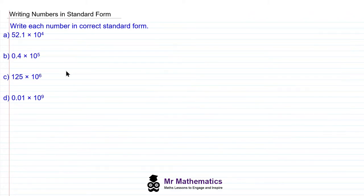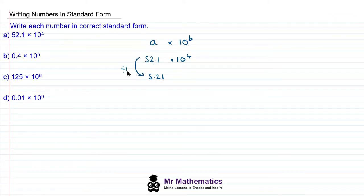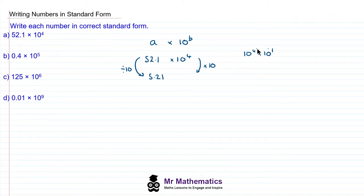Let's move on to some more questions. We now have 4 questions which are not quite written in standard form, because the number multiplied by 10 to a power is not between 1 and 9. For question A, we have 52.1 times 10 to the power of 4. The 52.1 needs to be written as 5.21, but to do this we divide by 10. To keep the number balanced, we add a power of 10 to the other part — so 10 to the 4 multiplied by 10 to the 1 gives us 5.21 times 10 to the power of 5. For question B, we have 0.4 times 10 to the power of 5. The 0.4 needs to be increased by a power of 10 to make it 4, so we decrease the power side by 1 — giving us 4 times 10 to the power of 4.